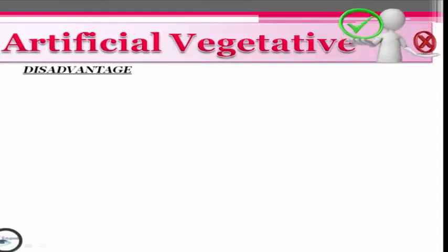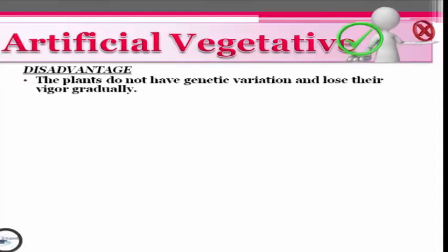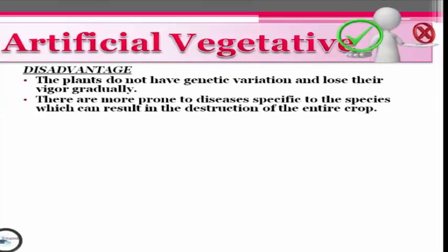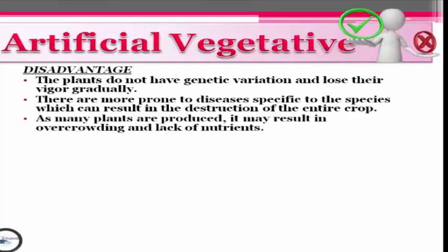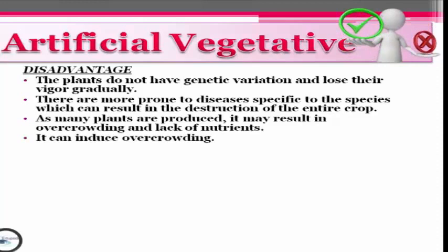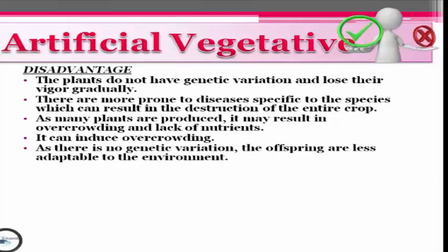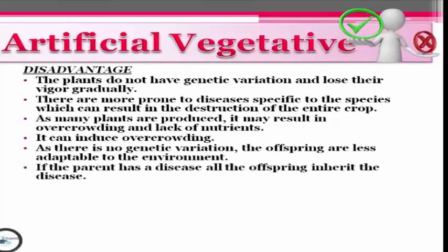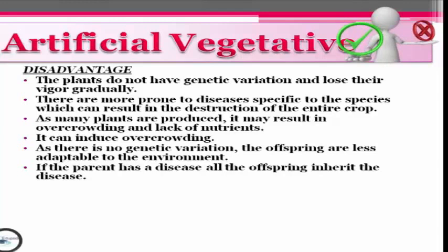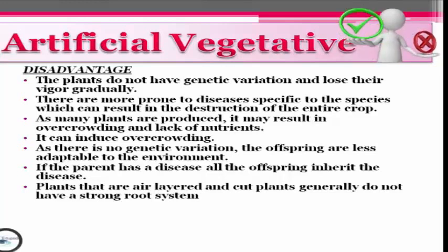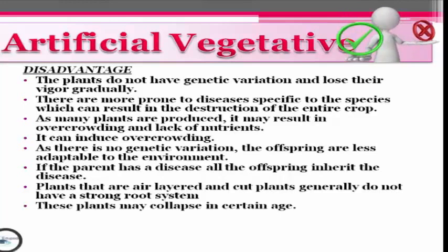Now let's look at the disadvantages of artificial vegetative propagation. First, the plants do not have genetic variation and lose their vigor gradually. They are more prone to diseases specific to the species, which can result in the destruction of the entire crop. As many plants are reproduced, it may result in overcrowding and lack of nutrients. With no genetic variation, the offspring are less adaptable to the environment. Also, if the parent has a disease, all the offspring will carry that disease as well. Plants that are air-layered or cut generally do not have a strong root system, so these plants may collapse at a certain age.